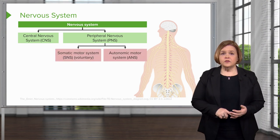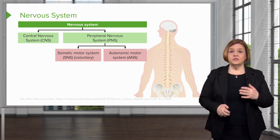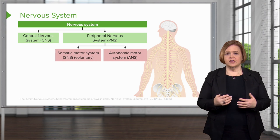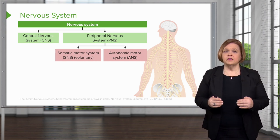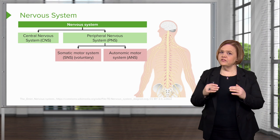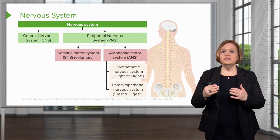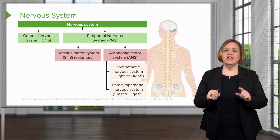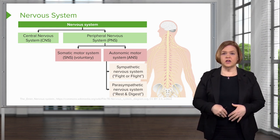Part of the peripheral nervous system is the somatic or the autonomic. The somatic motor system we kind of have control of — that's why you see the word voluntary. With the autonomic motor system, we don't have control of that; it's on autopilot. That breaks down into two more: the sympathetic nervous system, which is our fight or flight, and the parasympathetic nervous system, which is rest and digest.